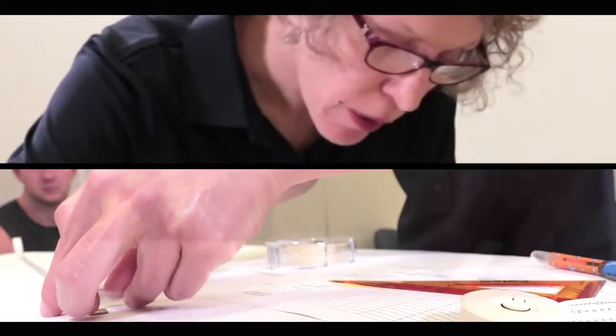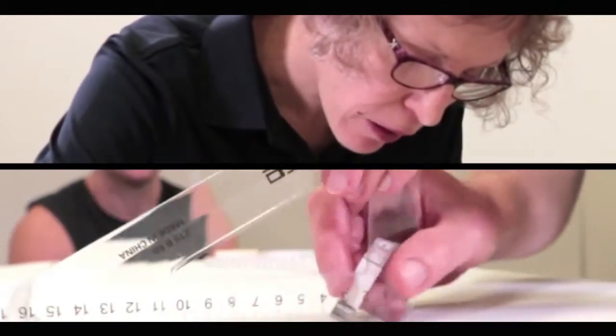If you do not have access to a measuring board, you can apply the principles already shown to achieve a reproducible limb position. For example, secure two tape measures parallel to each other on a height adjustable plinth.